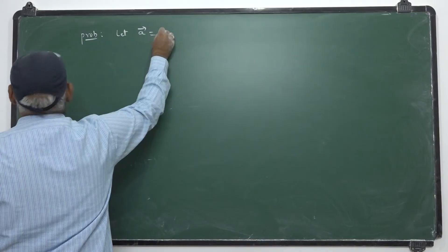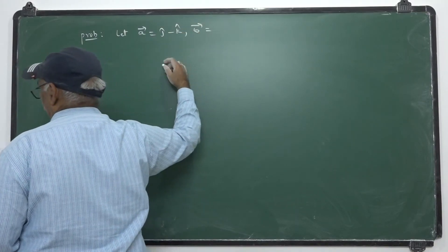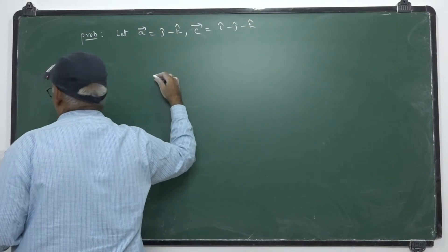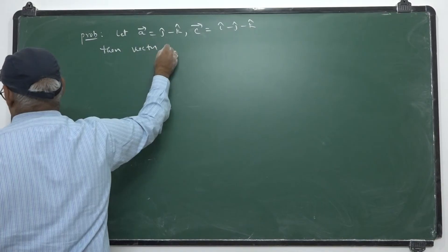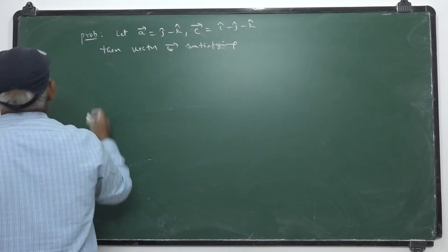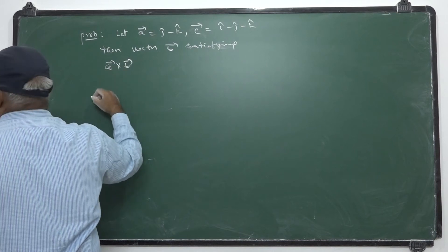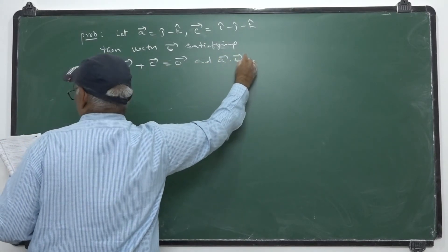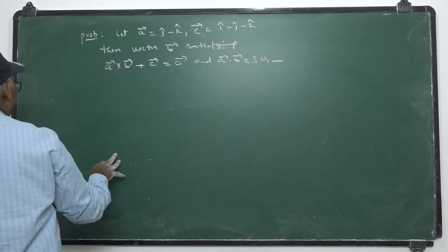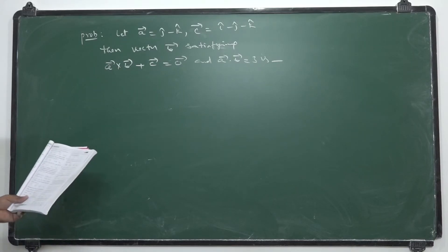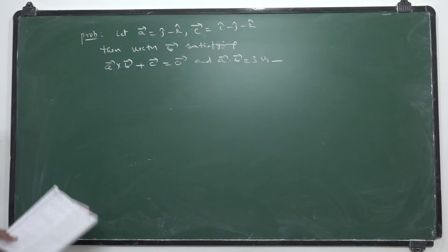Next problem. Let ā = j̄ - k̄, c̄ = ī - j̄ - k̄. Then the vector b̄ satisfying ā × b̄ + c̄ = 0̄ and ā · b̄ = 3.